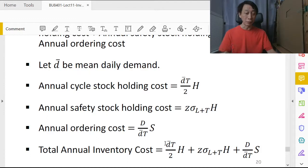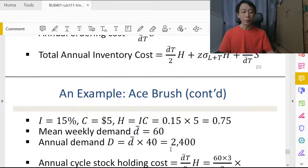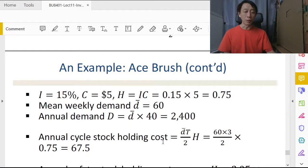So here's the calculation using the numerical quantities given by the question. So we have H, the holding cost per brush per year, being 75 cents. Weekly demand 60. Then we can work out the average annual demand, which is the average weekly demand times 40 weeks per year given in the question.